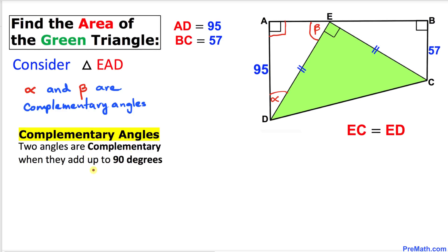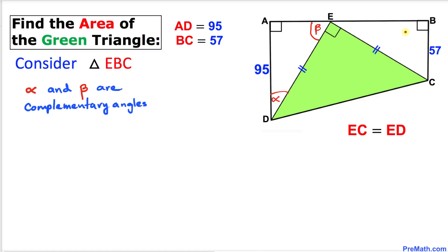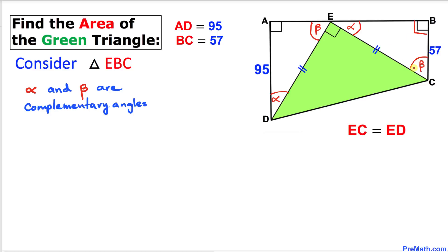Now let's focus on the other triangle, triangle EBC. We know that this angle is 90 degrees, and the sum of all angles equals 180 degrees, so this angle must be alpha. Likewise, since angle B is 90 degrees, this remaining angle has got to be beta because the sum of all three angles must be 180 degrees.